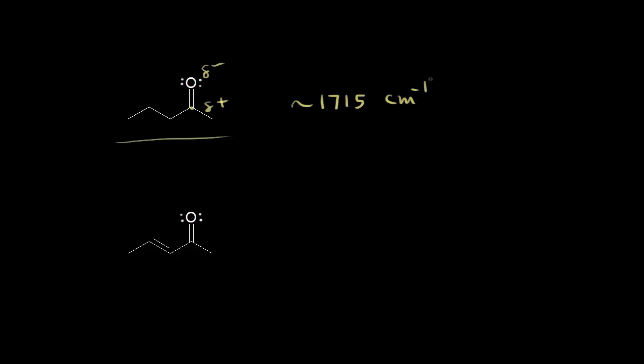It's a little different for a conjugated ketone. Down here we have the dot structure for a conjugated ketone. Conjugation lowers the signal for the wave number — let's see why.